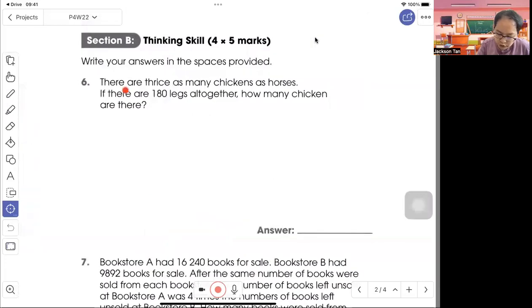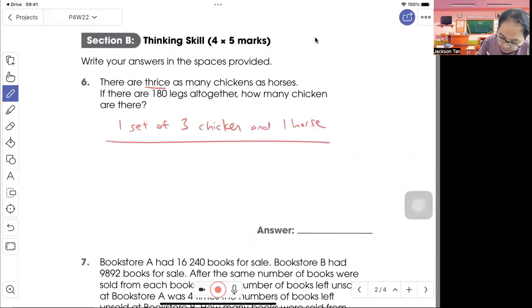Question 6. There are thrice as many chickens as horses. There are 180 legs altogether. How many chickens are there? When we talk about thrice means 3 times. So one set, there will be 3 chickens and 1 horse. So 3 chickens will be 6 legs, 1 horse will be 4 legs. So one set itself will have 10 legs altogether.